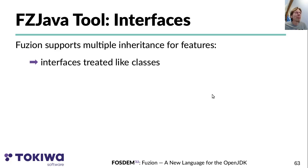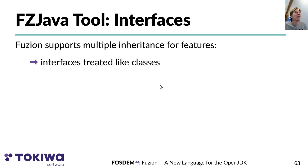Since Fusion supports multiple inheritance, interfaces in the original Java code are essentially treated the same way as classes when Fusion code is generated.